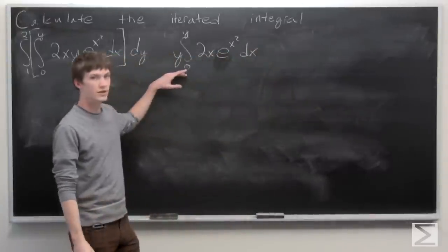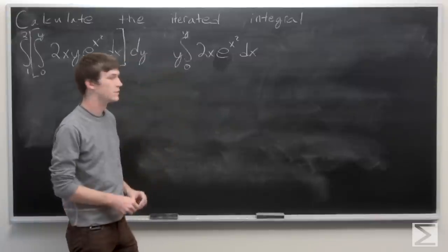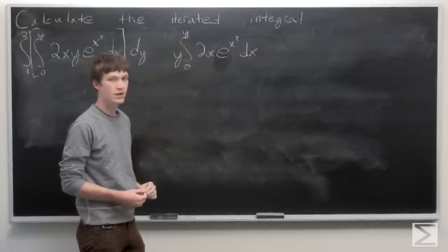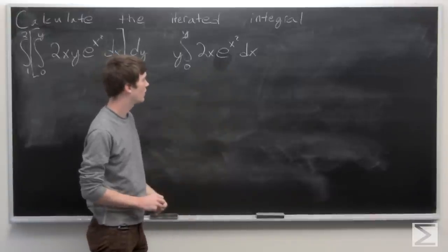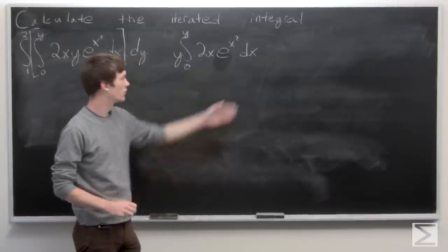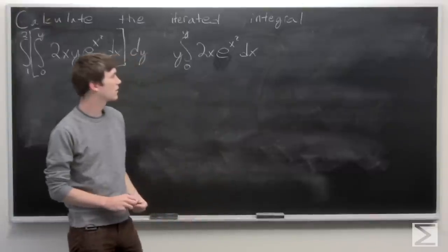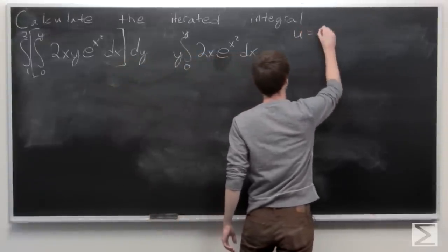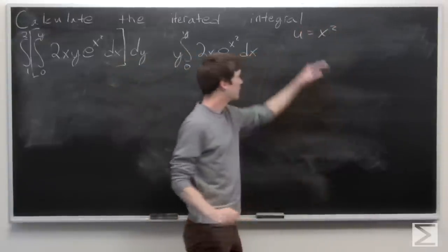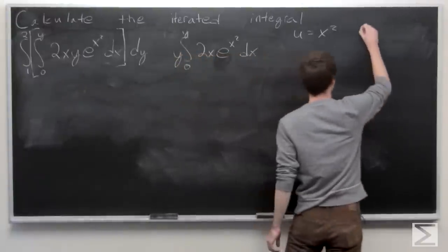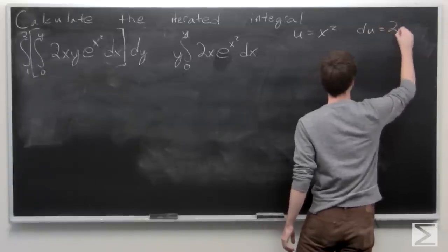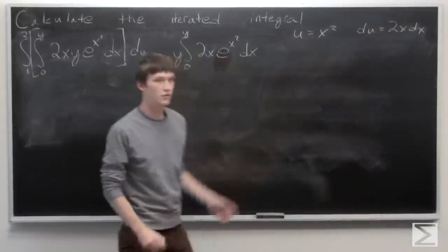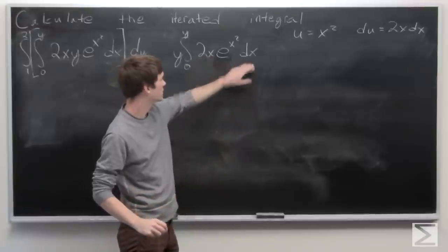We pull the y term to the outside of our integral since y is being held constant, so we have the integral from 0 to y of 2x times e to the x squared with respect to x. This looks like a good problem to use u-substitution. So if we let u be x squared, then du is going to be 2x dx.